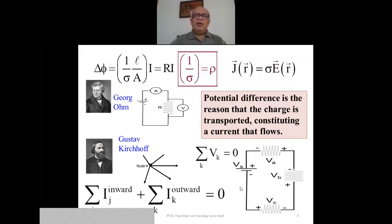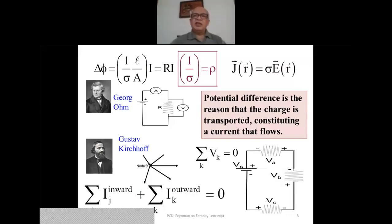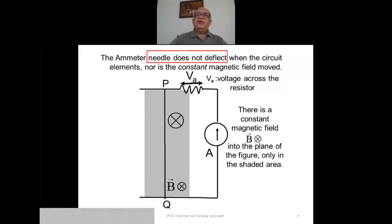The second law of Kirchhoff is that the sum of the voltage drops across different circuit elements in a closed circuit is zero. This is going to play a big role in subsequent discussions. So we have these constitutive relationships with Ohm's law and Kirchhoff's laws, and now we come across a very interesting experiment.